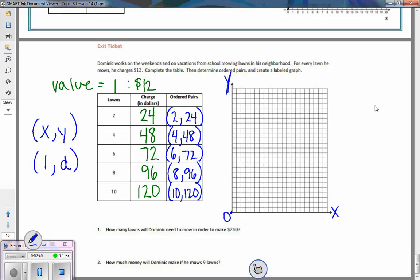We also need to remember that where they meet is always zero. In this case we have lawns and dollars, so our X is our lawns, and the vertical or the Y axis is our dollars.